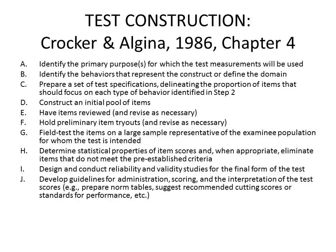We're going to construct an item pool. Items get reviewed and always revised — as items are written, even if you have the best subject matter experts and amazing item writers, we just need to go through and revise. Sometimes it's best if someone who writes an item has someone else review it, or maybe a team of people. We'll hold preliminary tryouts for items and revise as necessary, then we field test items on a large representative sample. Ideally, your test's empirical evidence, just like any other research, is as good as the sample that represents the population of interest. So make sure not to skip on this section.